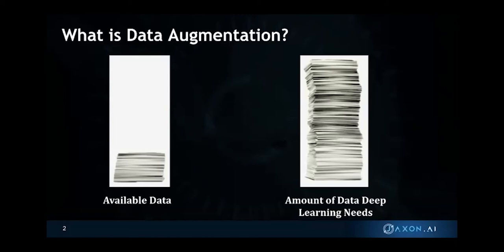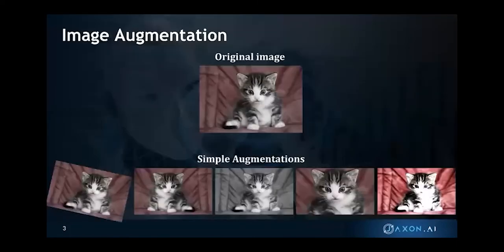In essence, the second way is GANs and the first way is like Photoshop techniques. PyTorch comes with a slew of first-method examples. So let's talk about image augmentation.